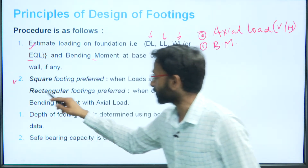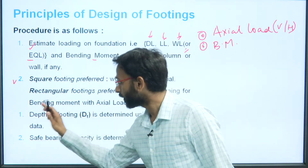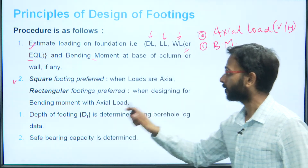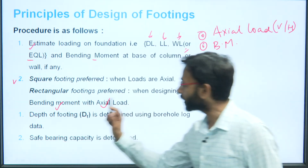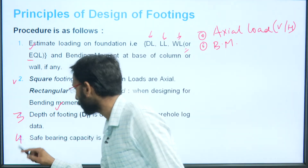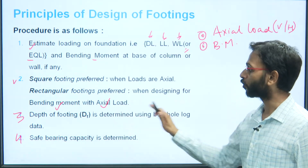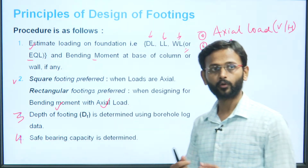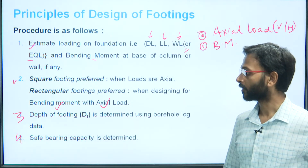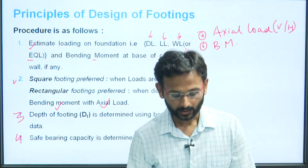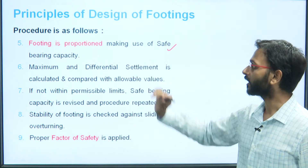Square footings are preferred when loads are axial. Rectangular footings are preferred when both bending moment and axial load are present. Third step: the depth of the footing is determined using borehole log data. Fourth step: the safe bearing capacity is determined. Following these four steps, you move to the fifth step where the footing is proportioned using the safe bearing capacity.